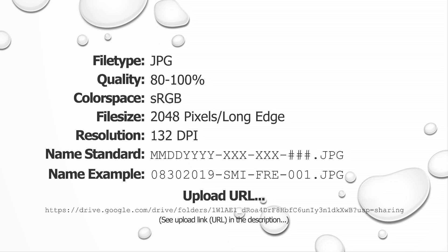If you are going to submit a file for a semi-monthly image critique, you want to export it using the guidelines you see here. Here is an example of a file name for today's date and our naming standard. If none of this makes sense to you, please take a look at our Update 01 video — you'll find a link below in the description. Also down there you'll find a link for the upload URL so you can submit this image for monthly image critique consideration.